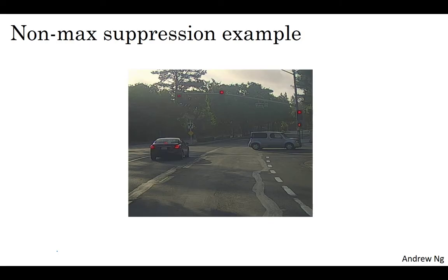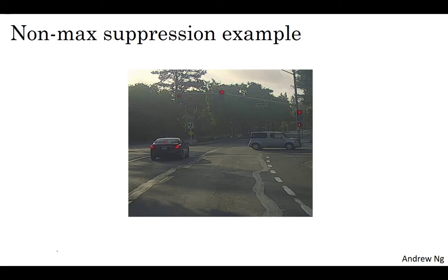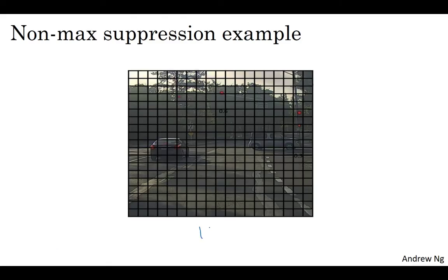Let's go through an example. Let's say you want to detect pedestrians, cars, and motorcycles in this image. You might place a grid over this, and this is a 19 by 19 grid. Now, while technically this car has just one midpoint, so it should be assigned just to one grid cell, and the car on the left also has just one midpoint, so technically only one of those grid cells should predict that there is a car.